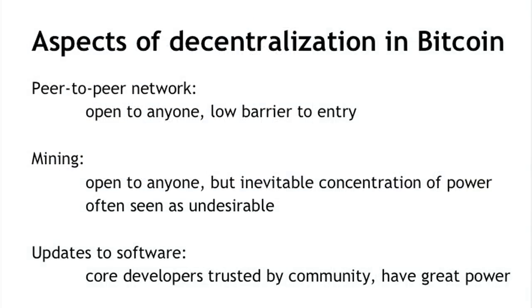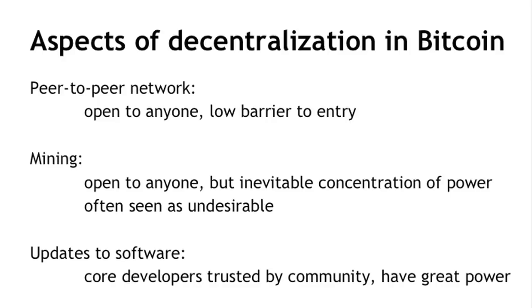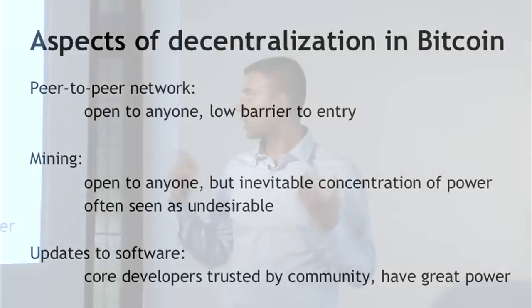Let me show you three different aspects of Bitcoin and where they fall on the centralization-decentralization spectrum. First, there's the peer-to-peer network, which is the closest thing to purely decentralized — anybody can run a Bitcoin node, there's a fairly low barrier to entry, and currently there are several thousand Bitcoin nodes. Second, there's Bitcoin mining, which is technically open to anyone, but requires a very high capital cost, leading to high centralization and concentration of power in the Bitcoin mining ecosystem, which the community frequently sees as quite undesirable.